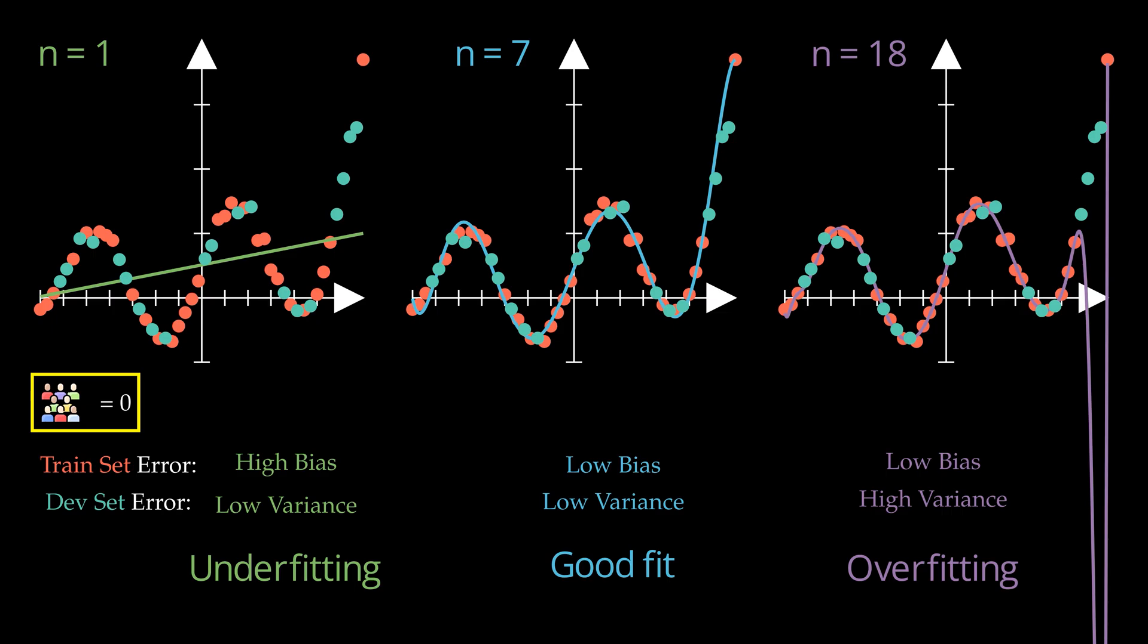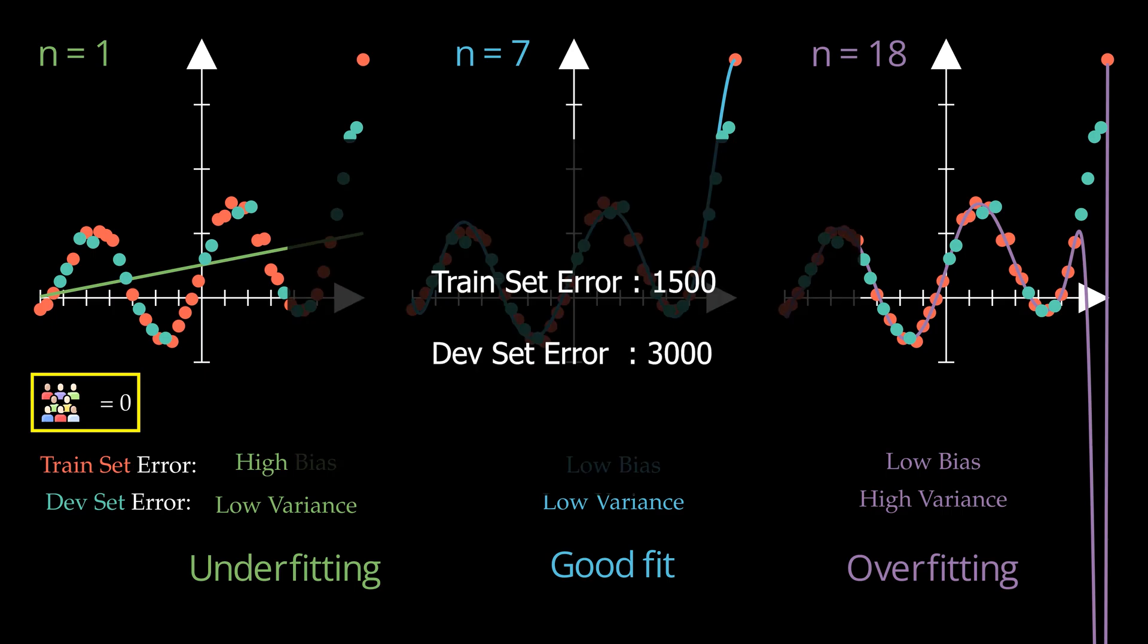Here is an exercise for you. Suppose you have a model that has worse of both worlds, that is it doesn't do well on training set, and the development set error is relatively higher too. Let's say the train error is 1500 and the development set error is 3000. What is the problem with this model? Answer in the comments.